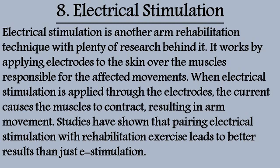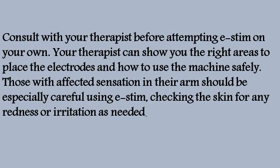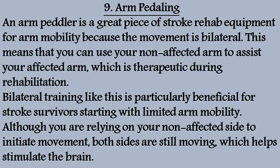Method 8: Electrical Stimulation. Electrical stimulation is another arm rehabilitation technique with plenty of research behind it. It works by applying electrodes to the skin over the muscles responsible for the affected movements. When electrical stimulation is applied through the electrodes, the current causes the muscles to contract, resulting in arm movement. Studies have shown that pairing electrical stimulation with rehabilitation exercise leads to better results than e-stimulation alone. Consult with your therapist before attempting e-stim on your own. Those with affected sensation in their arm should be especially careful, checking the skin for any redness or irritation.